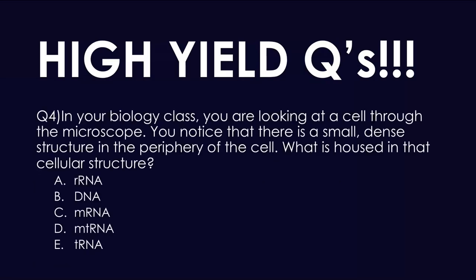Question four: in your bio class you look at a cell through the microscope and notice a small, dense structure in the periphery of the cell. What is housed in that cellular structure? The answer is B: DNA. mRNA is not housed there; mitochondrial RNA is in mitochondria; tRNA is in the cytoplasm. rRNA is created in the nucleolus but then gets released — it's not housed there. DNA is located in the nucleolus until it needs to be unwound for replication or gene expression.